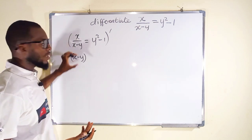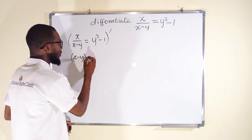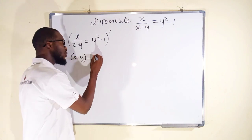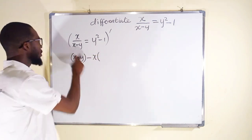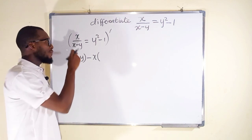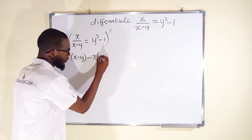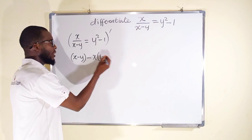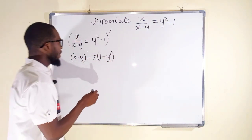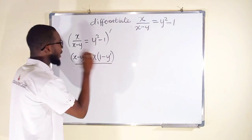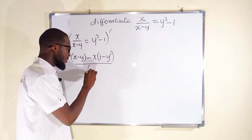Multiplying this by 1 it will not change. You subtract, now you take the top which is x, you multiply by the derivative of the bottom. The bottom is x minus y. If you differentiate x you get 1 minus, you differentiate y you get y prime or dy over dx. You divide by bottom squared which is x minus y all squared.